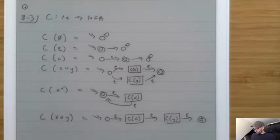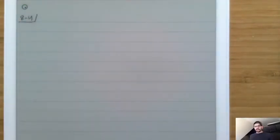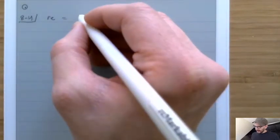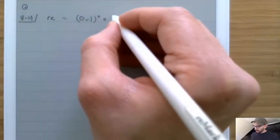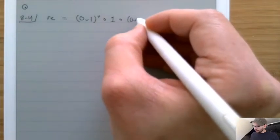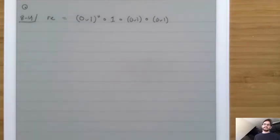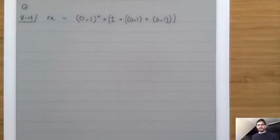Let's look at a little example. Let's look at a regular expression that describes the third character from the end being a one. That is: (0 union 1)* circ 1 circ (0 union 1) circ (0 union 1). That is the regular expression for 'third from the end is one.' Let's add parentheses to indicate the order, and then mechanically convert this into an NFA — and warning, it's going to be a big NFA.